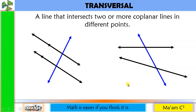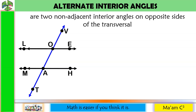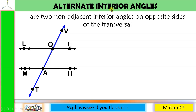But in this video lesson, we are going to focus our discussion on parallel lines cut by a transversal. Let's have the first one: alternate interior angles. These are two non-adjacent interior angles on opposite sides of the transversal. When we say alternate, it's like left and right, meaning not on the same side. When we say interior, it means inside.